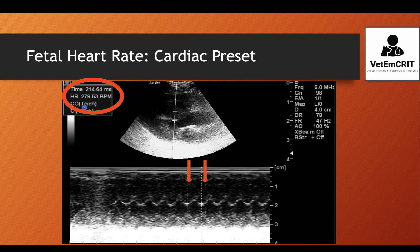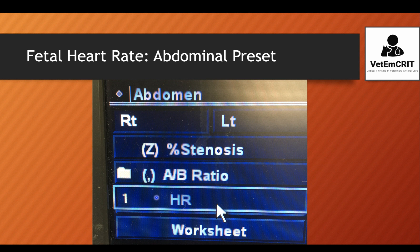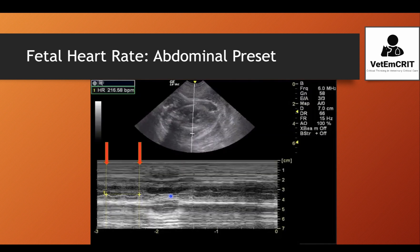In this case, the result was 279 beats per minute, which would be extremely hard to obtain with just subjective counting by looking at the beating heart. Next, we'll briefly cover how to get the same measurement using the abdominal preset. The principle is exactly the same: you choose your abdominal preset. You won't have the LBRV study option available, but the majority of machines will have an option called HR or heart rate. You click on it, identify the fetal heart, choose M-mode, and put the M-mode cursor across the heart in a similar way as demonstrated previously.